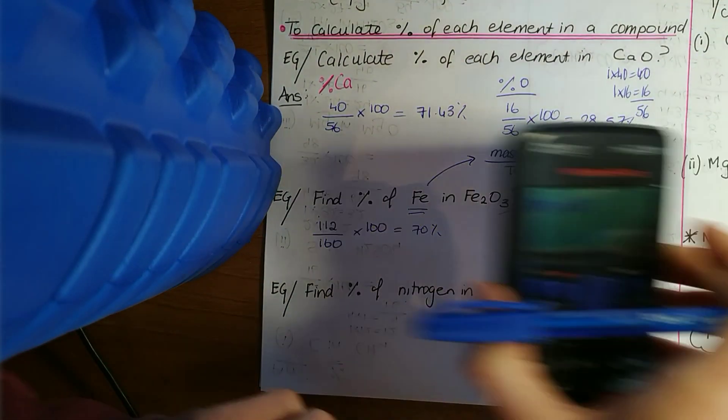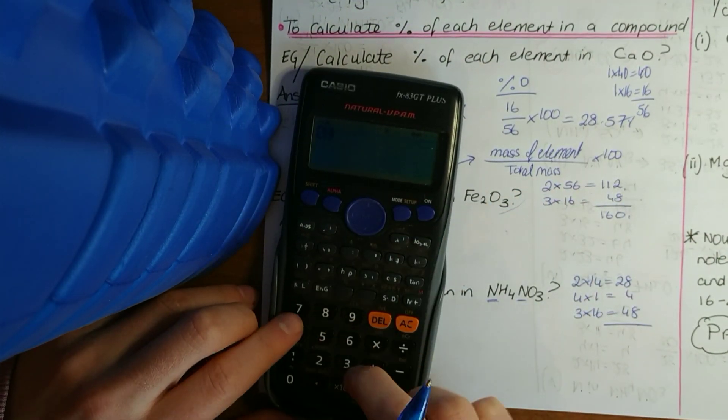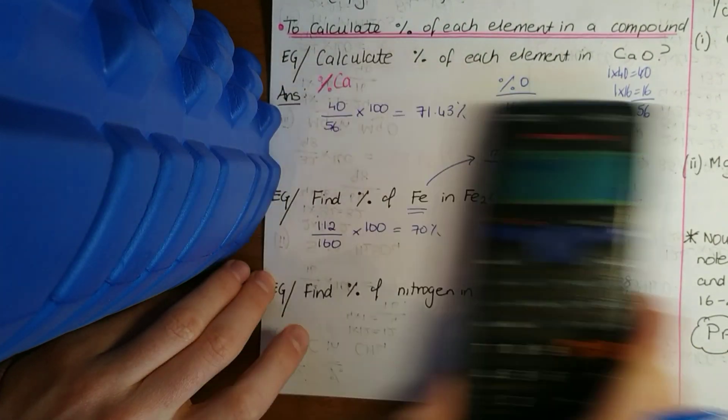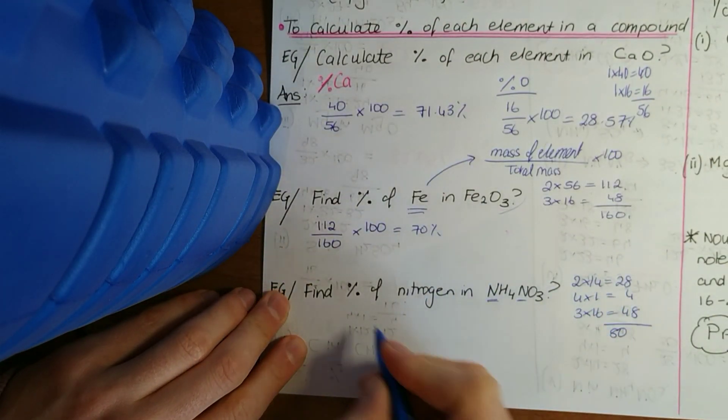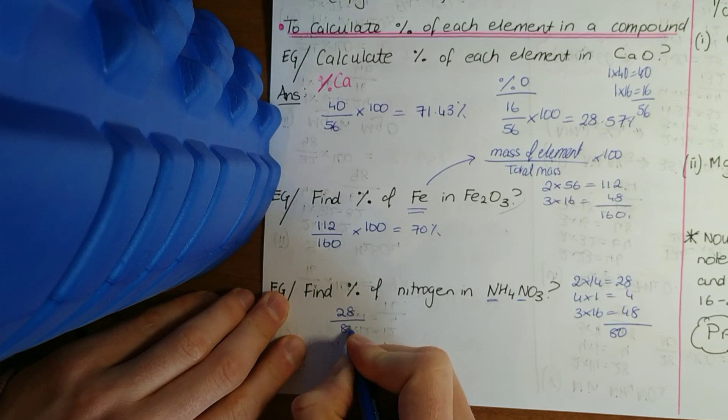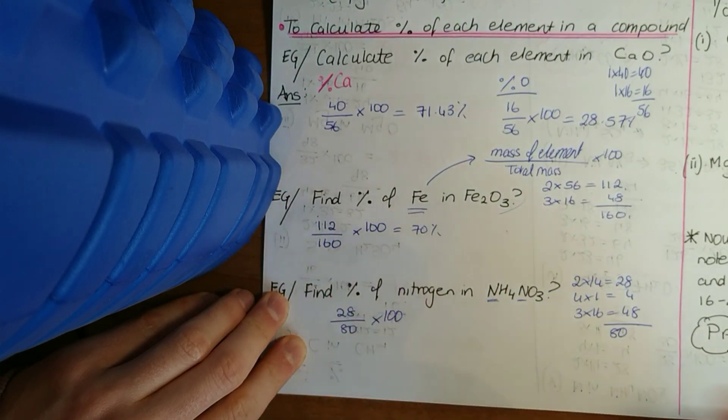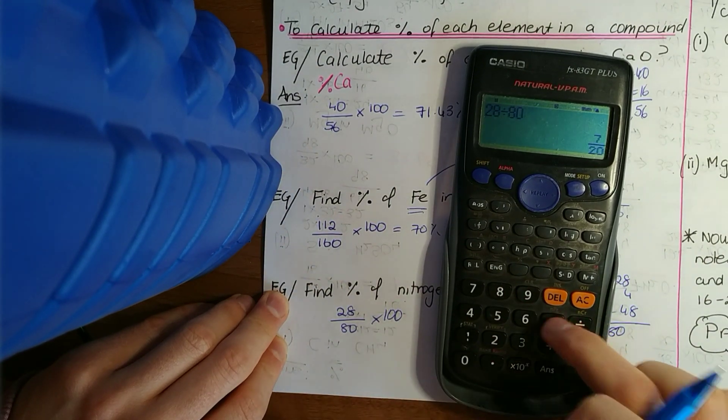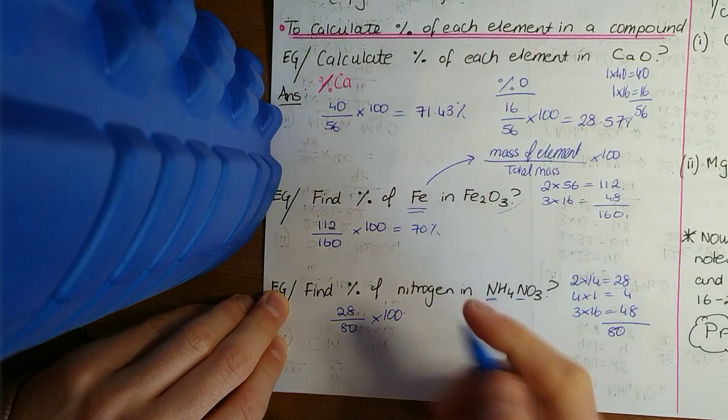Work out the total relative molecular mass. We can see two nitrogens, so 2 by 14 is 28. Four hydrogens, four hydrogens and three oxygens. Tally that all up: 28 plus 4 plus 48 is 80. And then the mass of nitrogen in it is 28 over 80, times that by 100 to make it a percent, 35 percent.